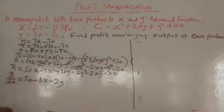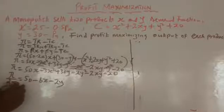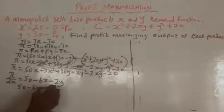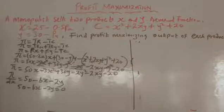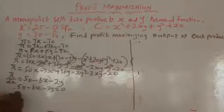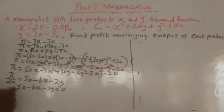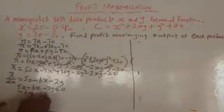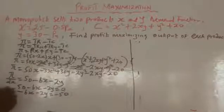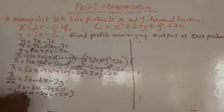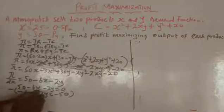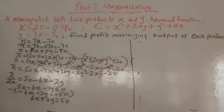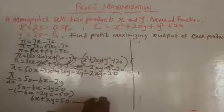For profit maximization, this partial derivative must equal zero. Setting ∂π/∂X = 0: 50 minus 6X minus 2Y equals zero. Moving terms: minus 6X minus 2Y equals minus 50. Multiplying both sides by minus one gives 6X plus 2Y equals 50. This is Equation 1.